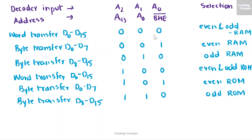When A0 is 0 and BHE is 1, the even bank is selected. When A0 is 1 and BHE is 0, the odd bank is selected. When both are 0, the transfer is a 16-bit word transfer. If both are 1, no data will be selected. Now we will draw a truth table using BHE, A0, and A13, since A13 is the one distinguishing EPROM and RAM. Since we have three lines for the decoder, we will choose a 3-to-8 decoder. The decoder inputs A0, A1, A2 will be BHE, A0, and A13 respectively. We derive all possible combinations except when both A0 and BHE are 1, giving us six combinations.